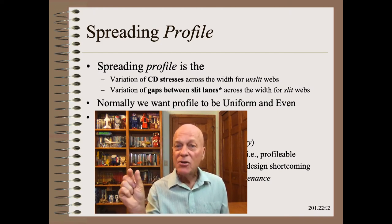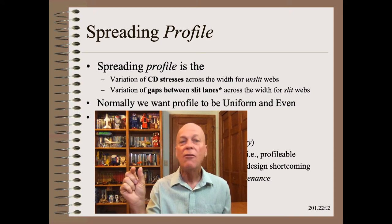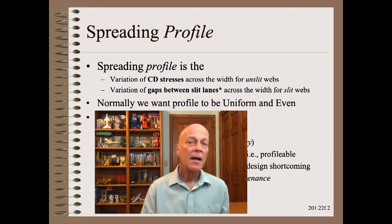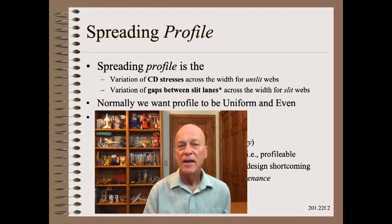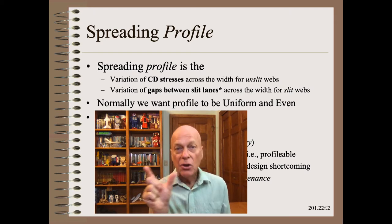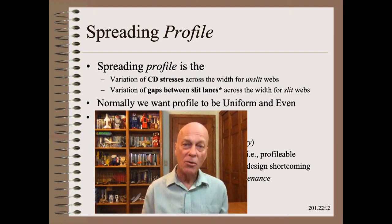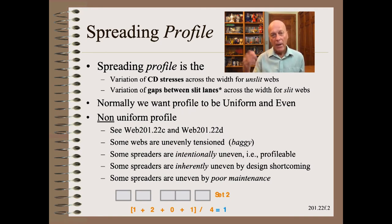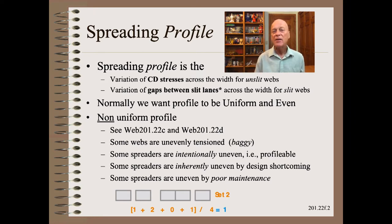Gap widths can be measured in many ways using photo-wise, cameras, and other instruments. Unfortunately, there are many ways that the gaps may be non-uniform with even uniform slit widths. Some of these have been covered in two previous clips. Here, we will cover baggy webs, intentional profiling that is possible with a D-bar spreader, uneven spreading caused by a spreader design shortcoming, and uneven spreading caused by poor maintenance.